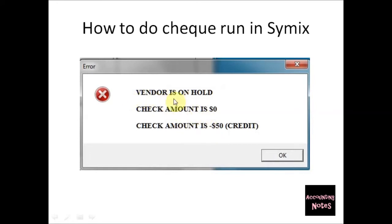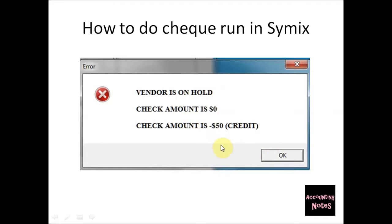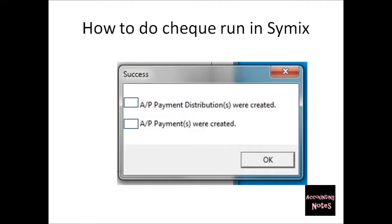When the check run is being performed, you will see the following three errors — they usually appear one by one. The first is Vendors on Hold: when you see this, it means a vendor has been put on hold, so click OK. The second error says the check amount is zero — you can still click OK. The third error says the check amount is a credit, for example minus fifty dollars. Since there would be no check for a credit, just click OK. All three errors are common, so just click OK.